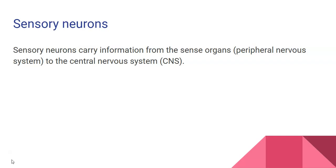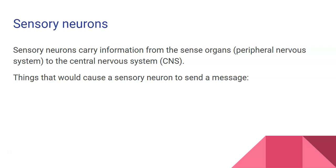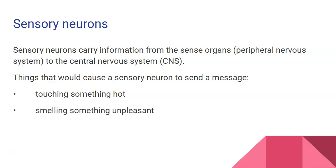Sensory neurons are the ones that carry information from your sense organs to your central nervous system — from your senses to your brain and spinal cord. Things that would cause a sensory neuron to send a message might be touching something hot, smelling something unpleasant, or tasting something yummy. All those things are passed from your senses to your brain and spinal cord.